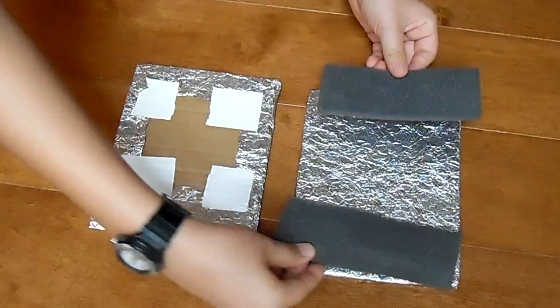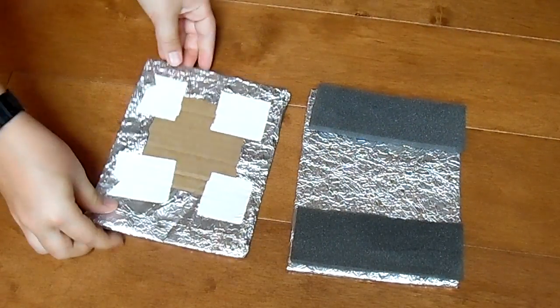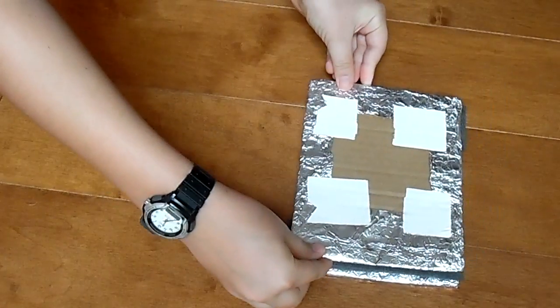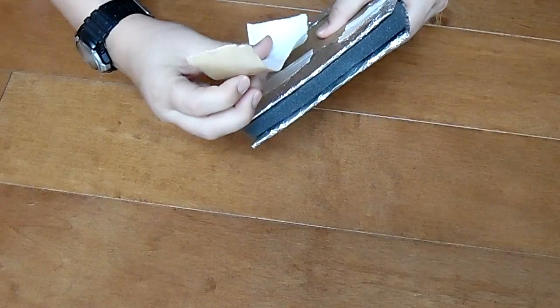Lay the foam on one sheet of cardboard with the aluminum foil on it. Place the other piece of cardboard with aluminum foil on top of it. Then, tape it together as shown.